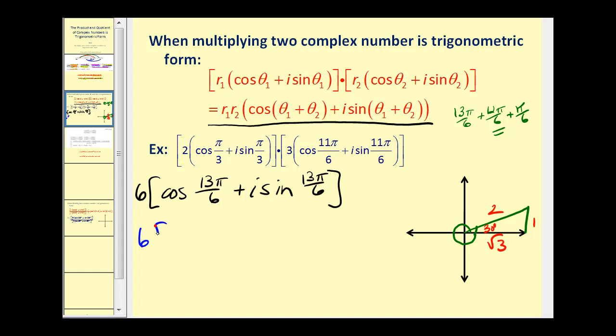So we'd have six times the cosine of 13π/6 would be √3/2, plus i times the sine of 13π/6 is 1/2. So we end up with six times √3/2 and six times 1/2 i. Well that would give us 3√3 plus 3i.